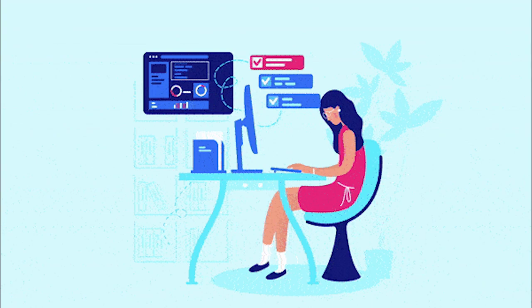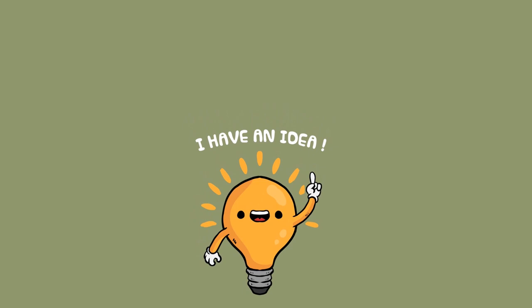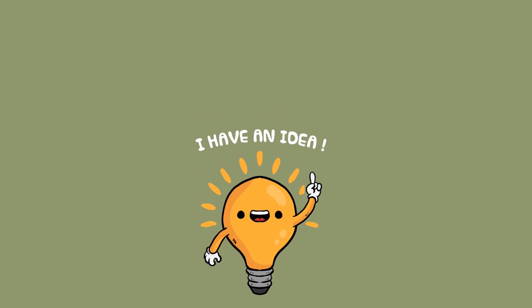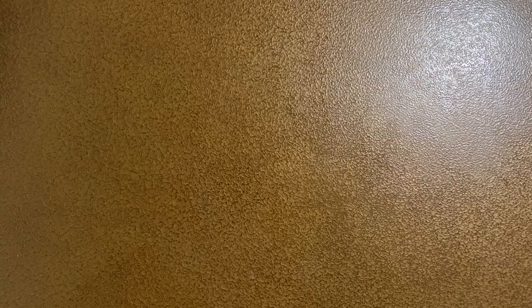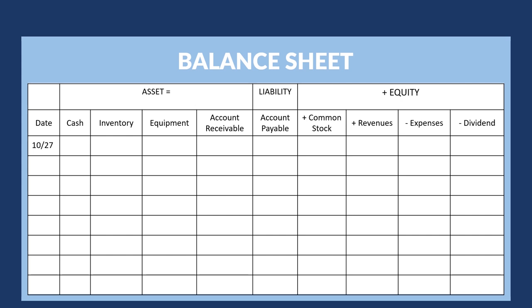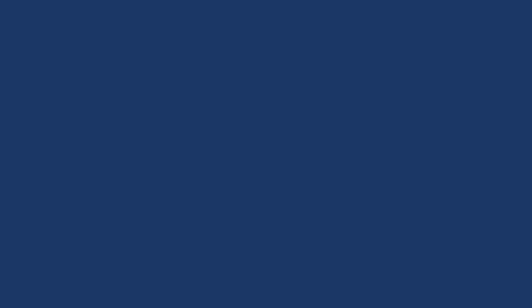Too theoretical, right? Don't worry. Let's go with our implementation. Let's say I'm coming up with an amazing business idea about selling pancakes during this fall season. The day I intend to operate is today, October 27th. I currently have $15 in my account and I decided to fund it all to my business. Because I have put $15 of my cash into common stock, my cash account will increase $15 and my common stock will increase $15. The equation is balanced here.